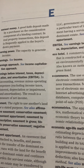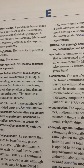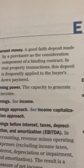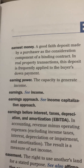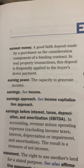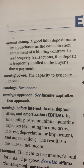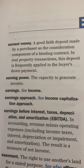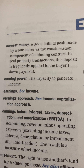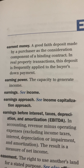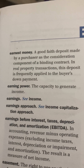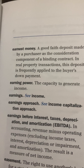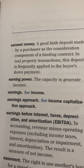The Dictionary of Real Estate Appraisal, page 71, chapter E. Earnest Money: a good faith deposit made by a purchaser as the consideration component of a binding contract. In real property transactions, this deposit is frequently applied to the buyer's down payment.